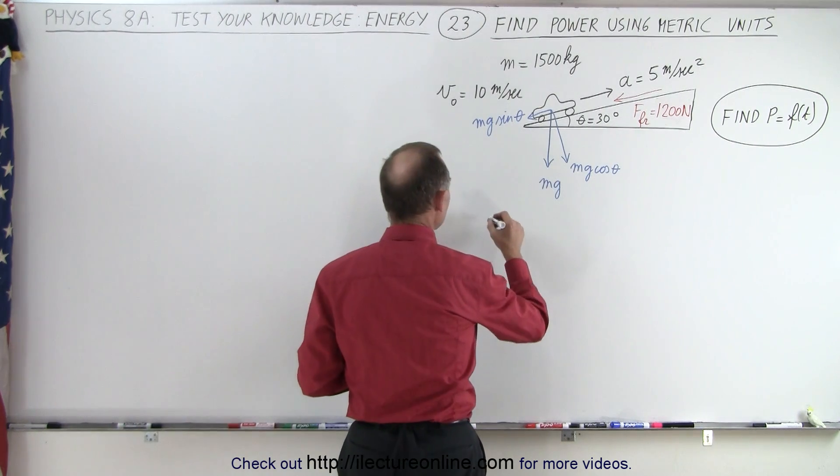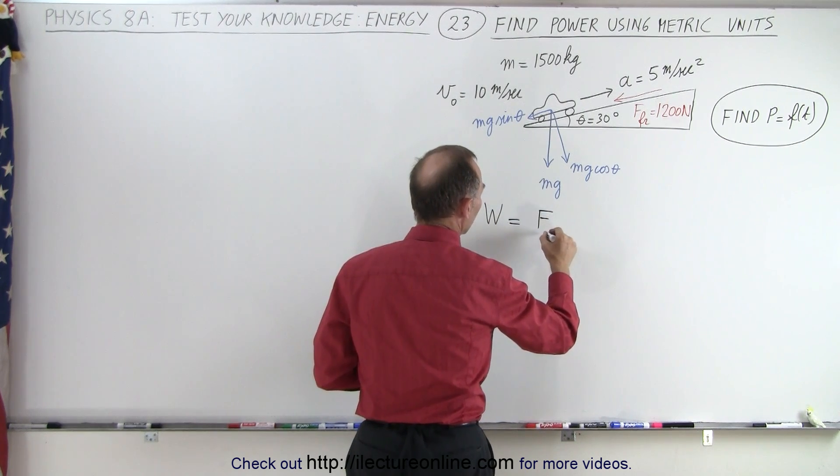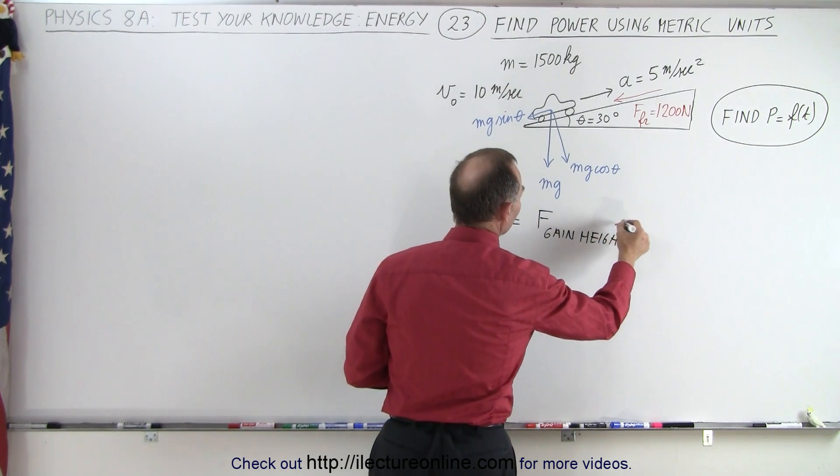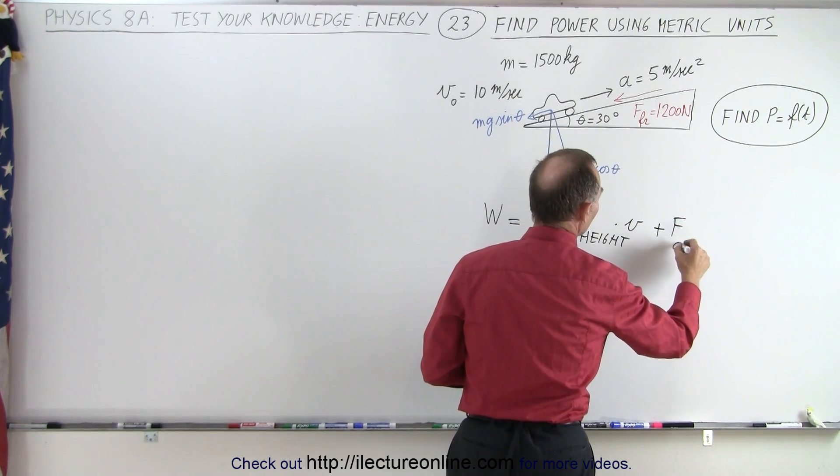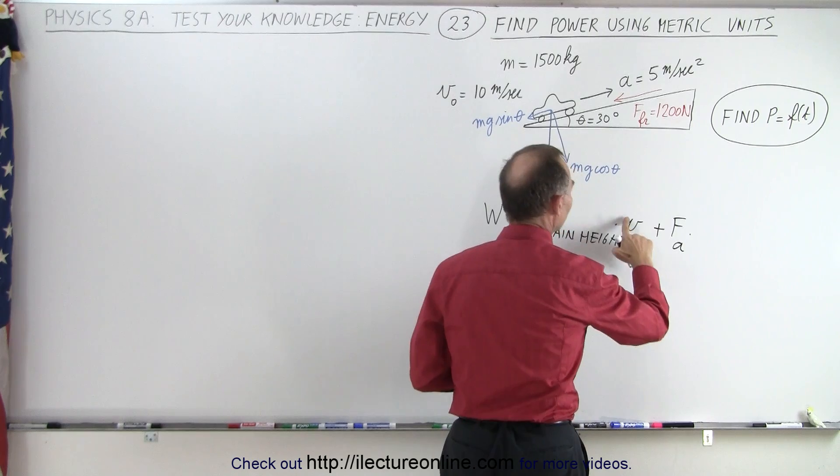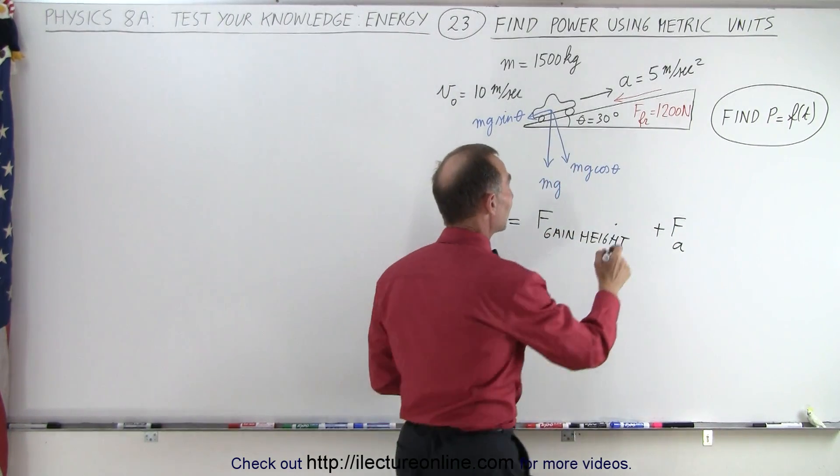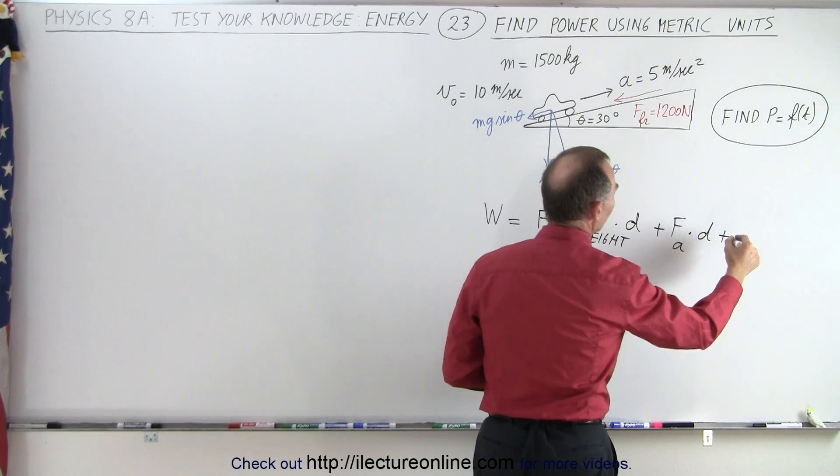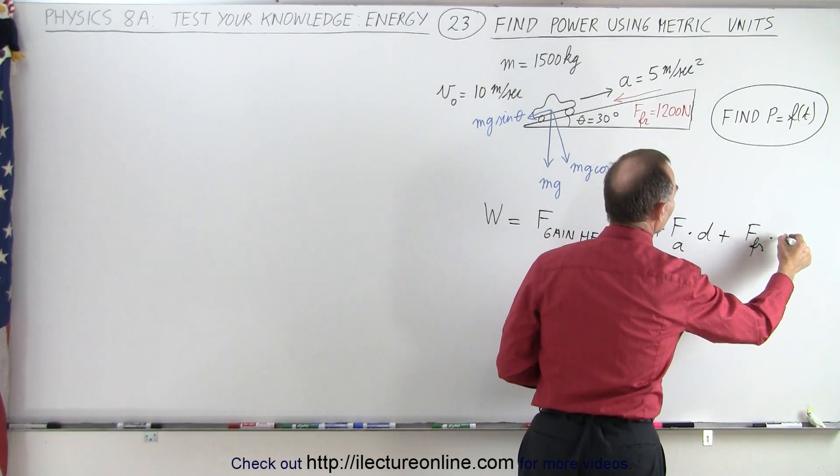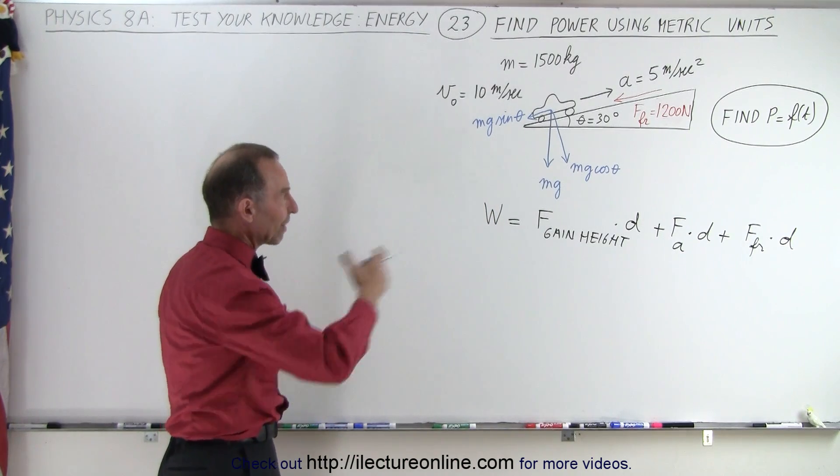So we can say that the power required—first we can start with the work. The work required to drive the car up the hill is equal to the force required to gain height times the distance, plus the force required to accelerate times distance, plus the friction force times distance. So that's the equation we need to calculate the work required to drive the car up the hill.